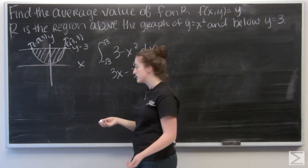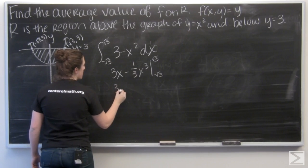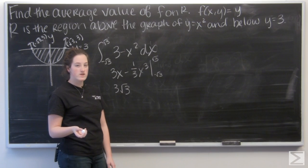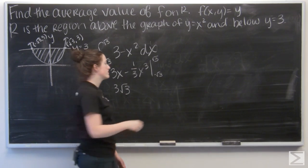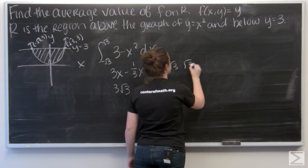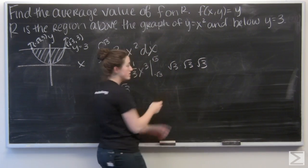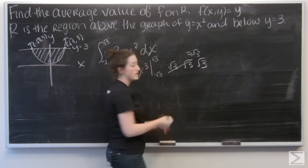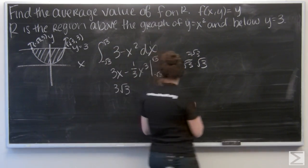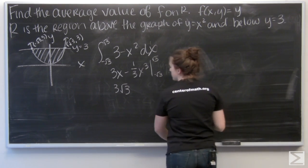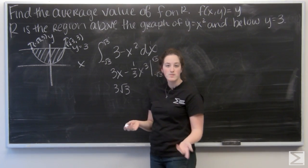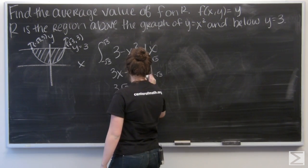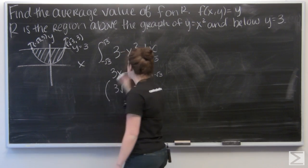So let me plug in root 3 first. So 3 root 3, and then root 3 to the third is going to be 3 square roots of 3. So these two will combine to be 3, and then I'm left with 1 square root. Since I'm multiplying that by 1 third, I'm just going to have root 3. The 3 and the 1 third will cancel out. So that's my first one.